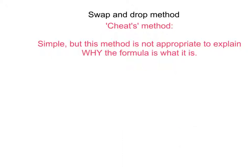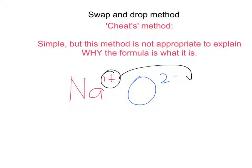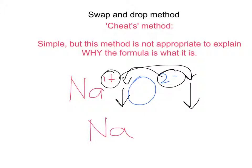The last example using swap and drop is sodium oxide: Na⁺ and O²⁻. Take the 1 from sodium, swap and drop it onto oxygen's side; take the 2 from oxygen, swap and drop it onto sodium's side. Because we don't write subscript 1s, the final formula is Na₂O. That's the swap and drop method — a much simpler way of doing things, but once again it is not a full explanation as to why the formula is what it is.